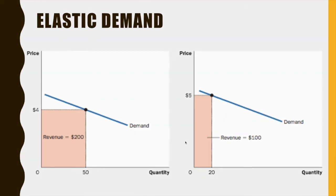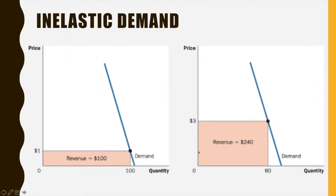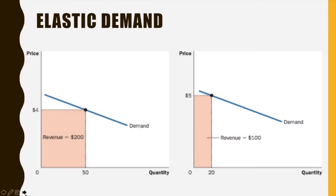If you have a product with inelastic demand — like gasoline — you're better off raising the price. You'll lose some customers, but not that many. If you have a product with elastic demand — like plasma screen televisions — you actually want to reduce your price, because you'll gain more customers than you lose, since the percent change in quantity is bigger than the percent change in price.